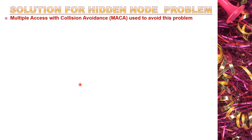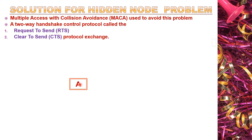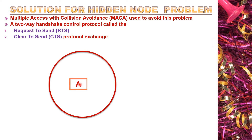This problem is eliminated by using the MACA algorithm — Multiple Access with Collision Avoidance — which avoids the hidden node problem by performing a handshaking operation between nodes before transmission of the packet. This two-step process involves one called Request to Send (RTS) and another called Clear to Send (CTS). RTS and CTS packets are utilized to perform the handshaking operation between nodes to avoid the hidden node problem.